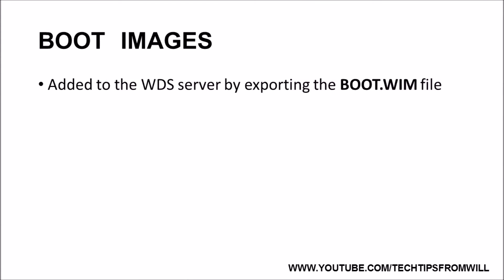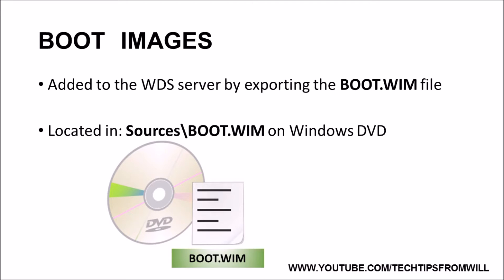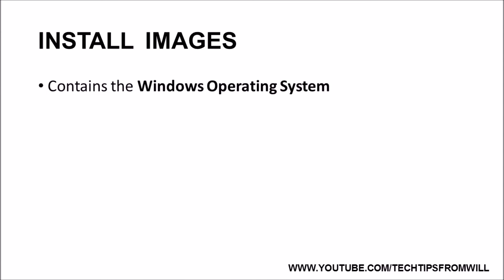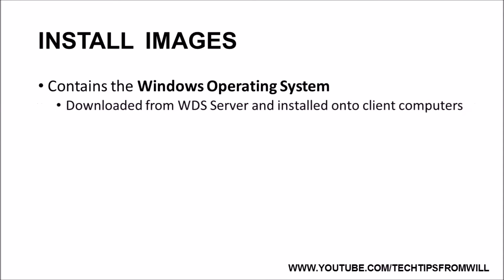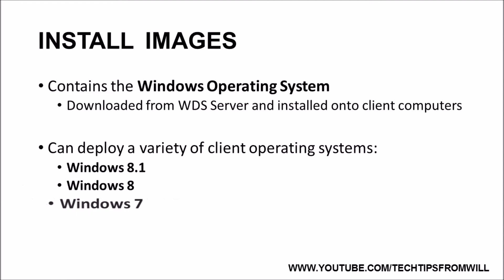Boot images can be added to the WDS server by exporting the boot.wim file, which contains the Windows PE interface. The boot.wim file can be found in the sources directory of the Windows DVD. An install image contains the actual Windows operating system which is to be downloaded from the WDS server and installed onto a client computer. Windows Deployment Services can deploy a wide range of Windows client operating systems, including Windows 8.1, Windows 8, Windows 7, and even Windows Vista.